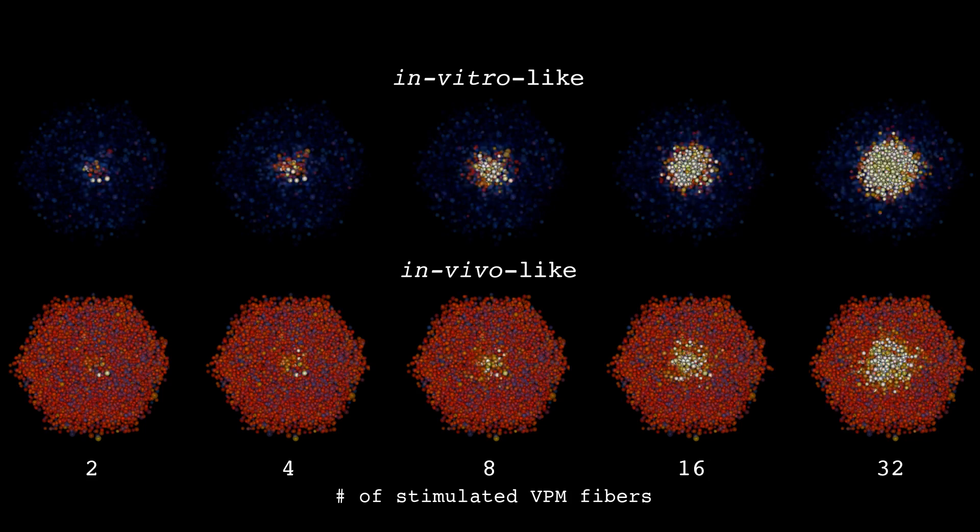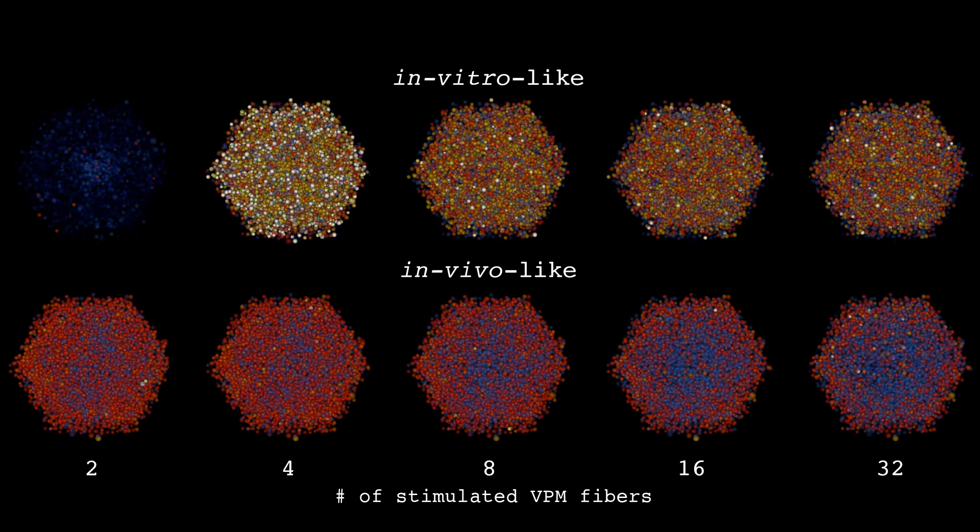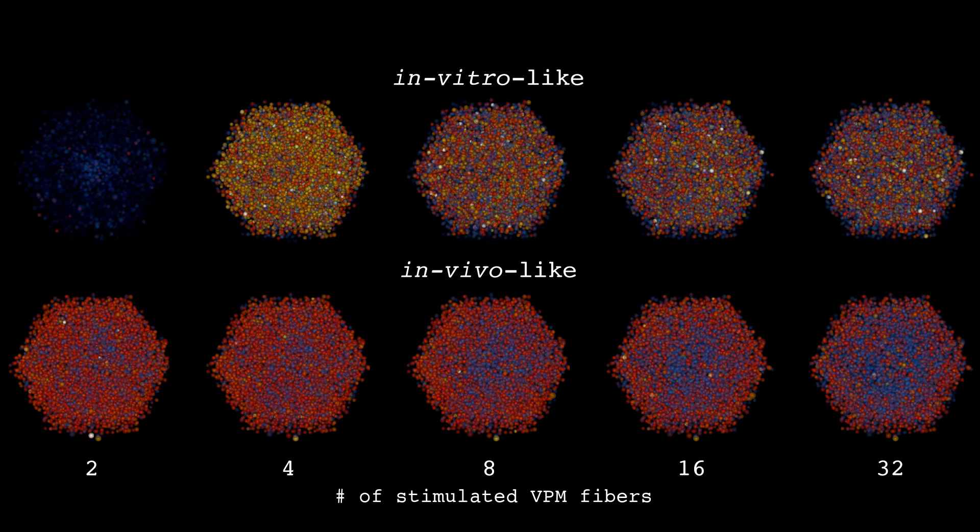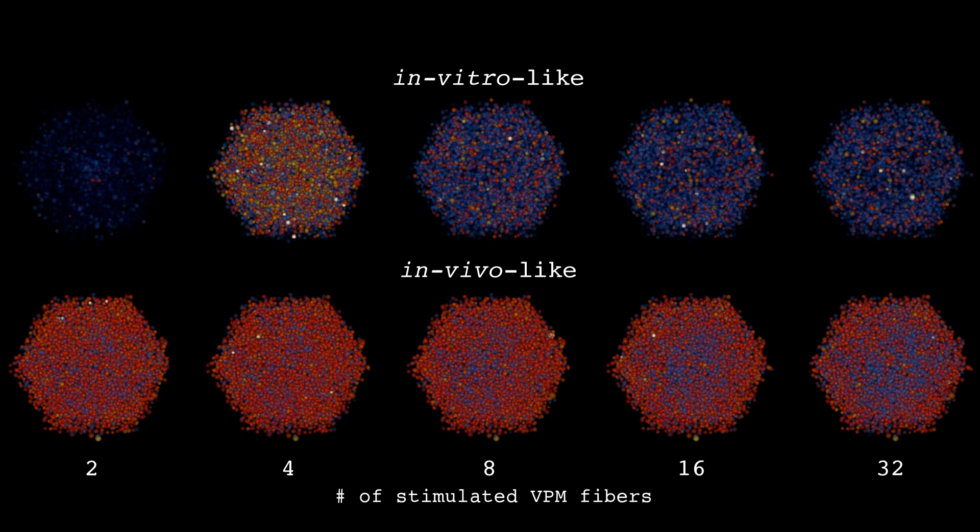We found that modulation of calcium played a fundamental role in determining network state. In particular, we found a sharp transition between synchronous and asynchronous states that was calcium-mediated. And we found that at this very sharp transition, the circuit has very interesting computational properties.